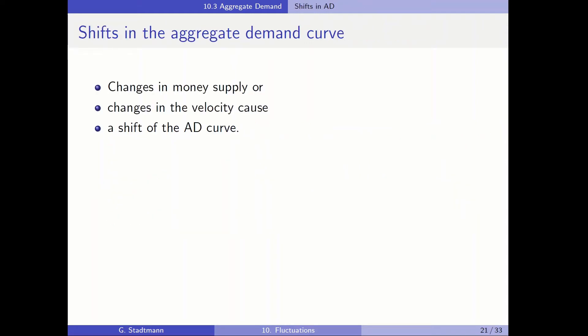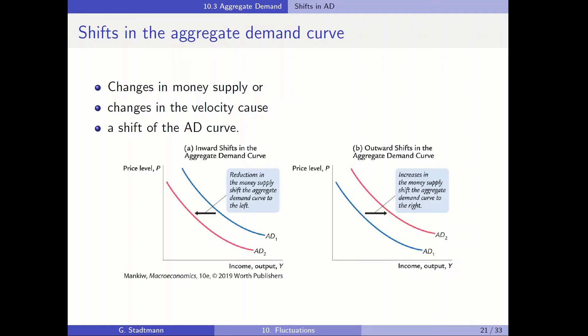Let's talk about shifts in the aggregate demand curve. The aggregate demand curve will shift when money supply changes or when velocity changes. If money supply or velocity decreases, the aggregate demand curve shifts to the left. If money supply or velocity increases, the aggregate demand curve shifts to the right.